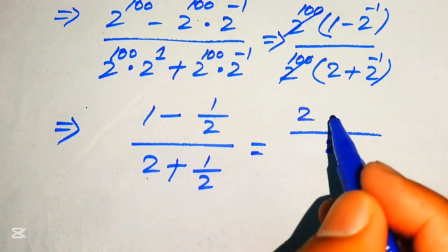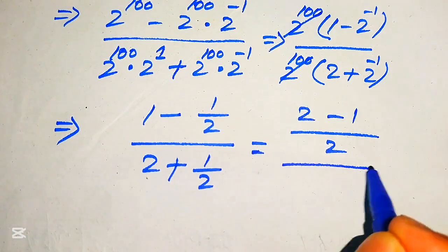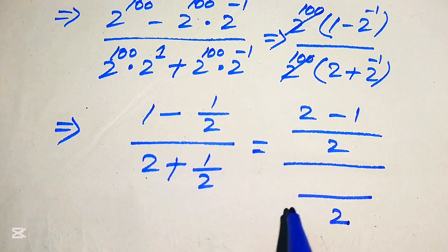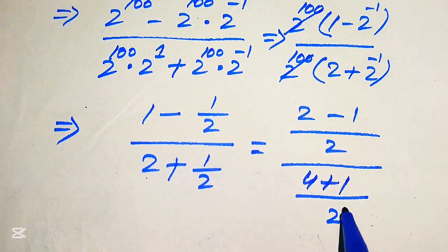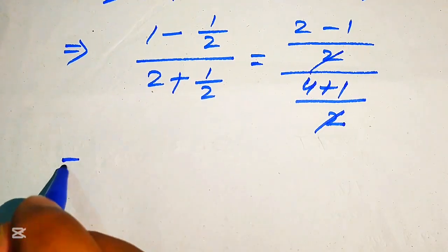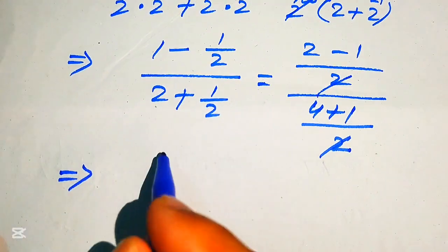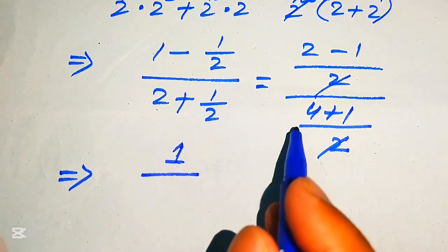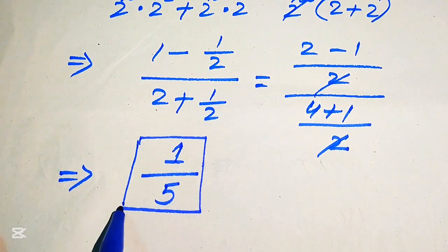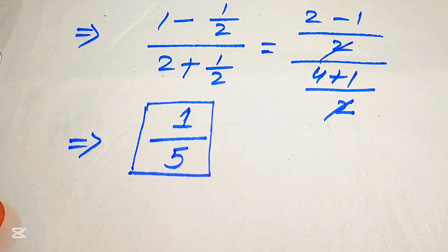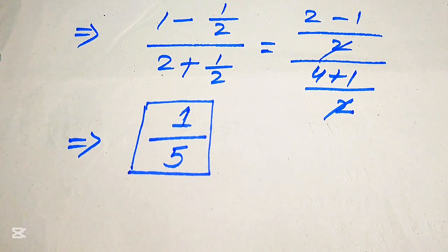In the numerator the LCM gives 2 minus 1, and in the denominator the LCM gives 2 times 4 plus 1. The 2s cancel out and we obtain 2 minus 1 equals 1, divided by 4 plus 1 equals 5, giving 1/5 as the final answer. From both methods we get the same answer: 1/5. Thank you so much for watching this video. Please subscribe to my channel for more exciting videos.